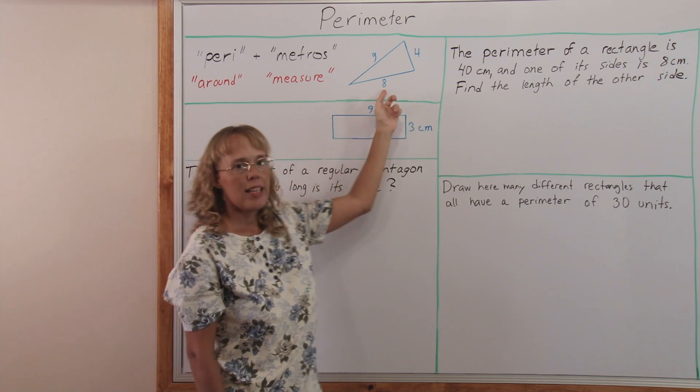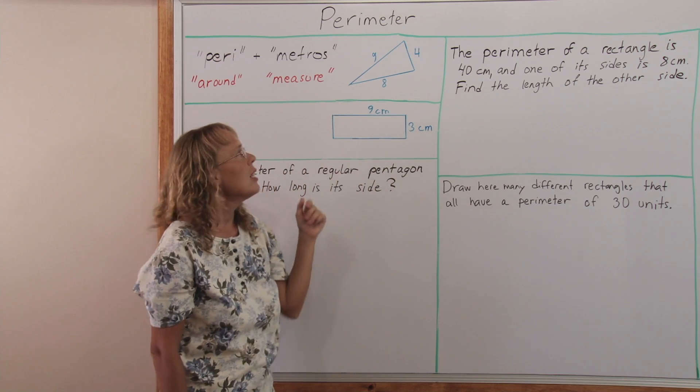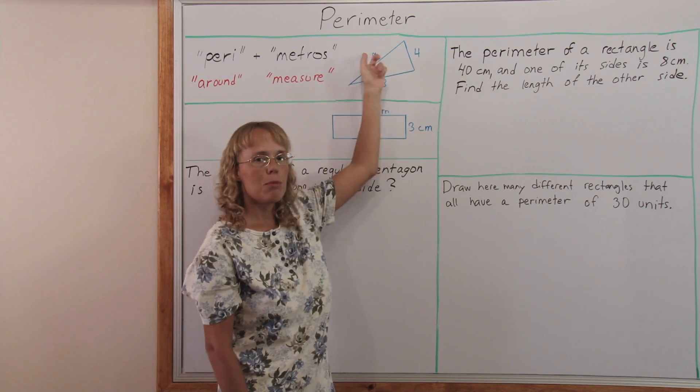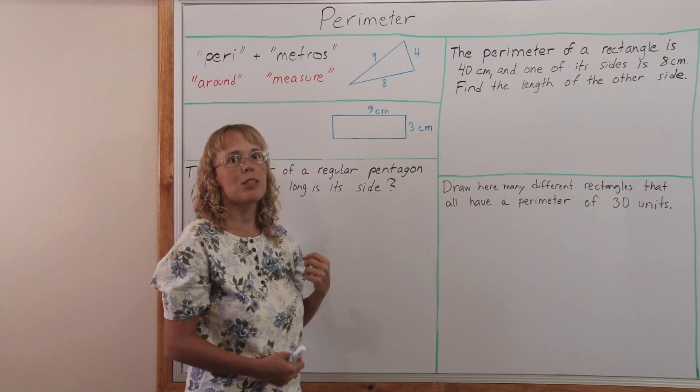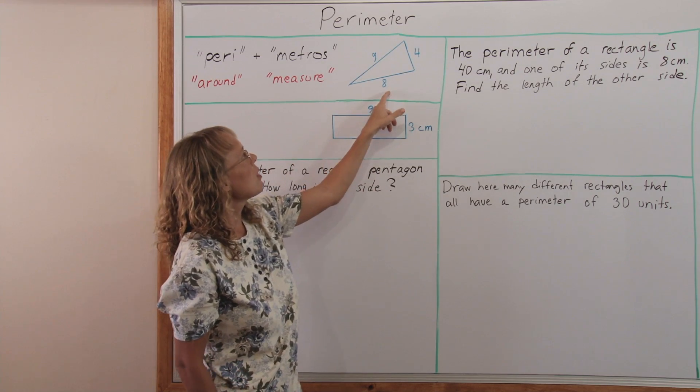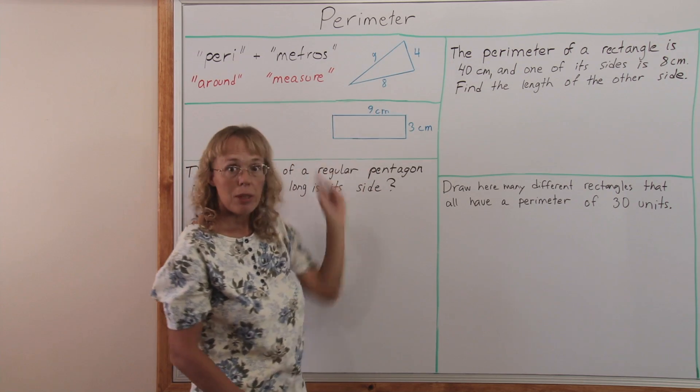This triangle, if its sides are 8, 4 and 9 units, then you just add these numbers of course to get the total distance you went when you went around the loop.